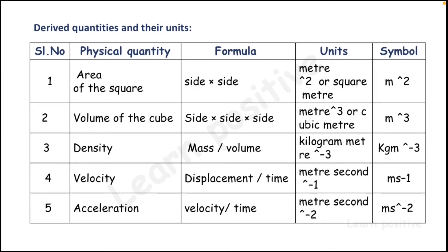Density: formula is mass divided by volume, unit is kilogram per cubic metre, symbol kg/m³. Velocity: formula is displacement divided by time, unit is metre per second, symbol m/s or m·s⁻¹. Acceleration: formula is velocity divided by time, unit is metre per second squared, symbol m/s² or m·s⁻².